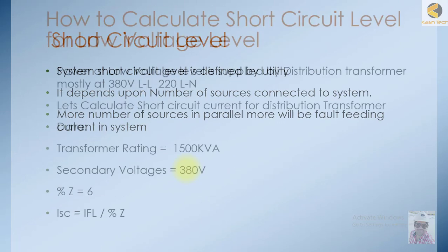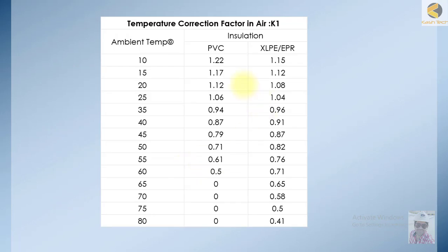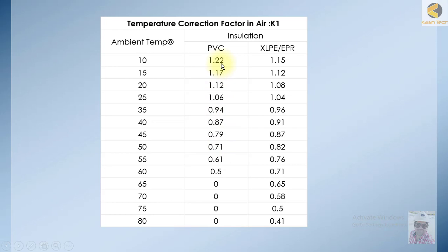This is the temperature correction factor K1. As discussed, if the ambient temperature in a very cold area cannot go beyond 10 degrees, the capacity of the cable increases — it goes to 1.22. So if you are using a PVC cable rated at a certain ampere, at 10 degrees the capacity will be multiplied by 1.22, and XLPE capacity is multiplied by 1.15.